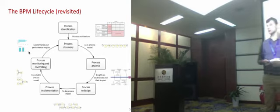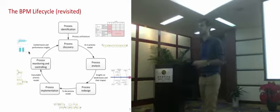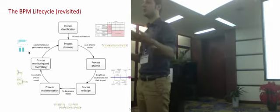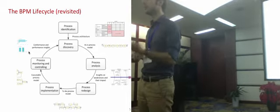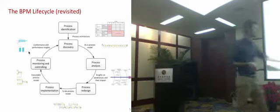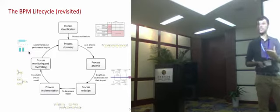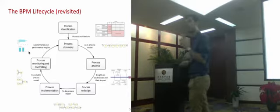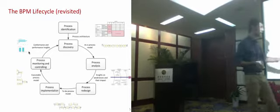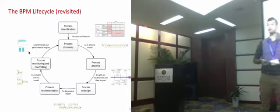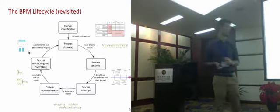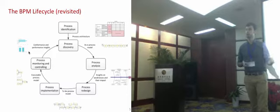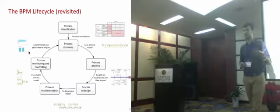In process analysis, we use qualitative and quantitative analysis techniques to get insights on the weaknesses of our business processes and their impact on the organization. We then identify and implement opportunities for improvement to fix these issues. The result is a to-be process model, still at the conceptual level, where identified issues have been resolved. Then there is the process implementation step, where we can implement the processes effectively within the organization — either manually, by kicking off a change management plan, or through a BPMS.